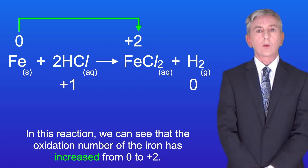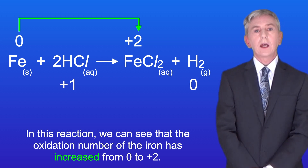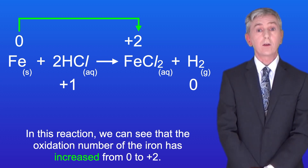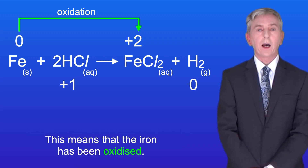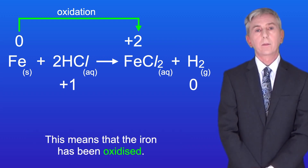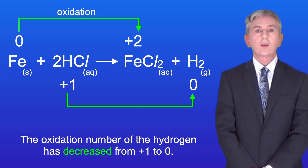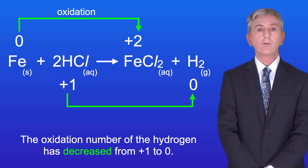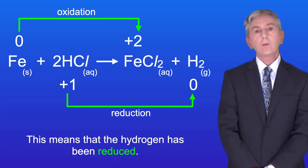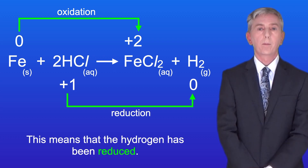In this reaction we can see that the oxidation number of the iron has increased from zero to plus two. This means that the iron has been oxidized. The oxidation number of the hydrogen has decreased from plus one to zero, and this means that the hydrogen has been reduced.